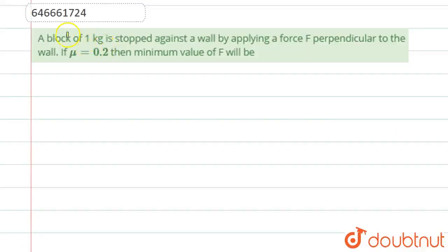Hello students, now we are going to see this question. The question says that a block of 1 kg is stopped against a wall by applying a force F perpendicular to the wall. If mu is equal to 0.2, then the minimum value of F will be.